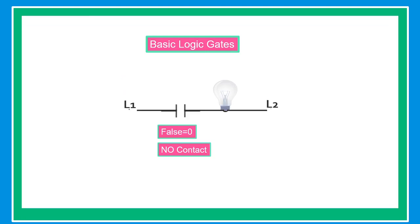Before we go on with our discussion, let's first discuss the normally open and normally closed contact. In this example, the bulb does not glow because the contact is normally open or false. The current from line 1 cannot pass through the circuit.